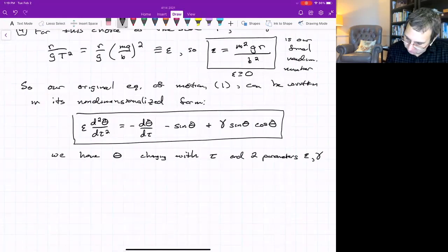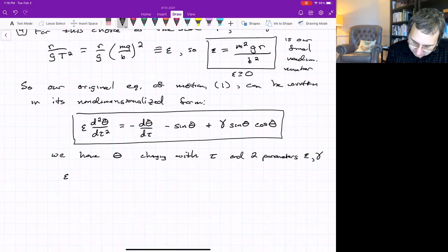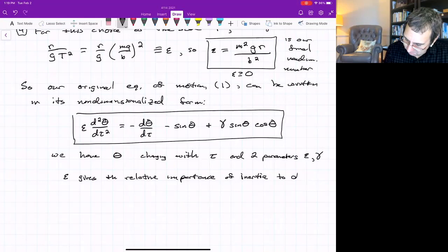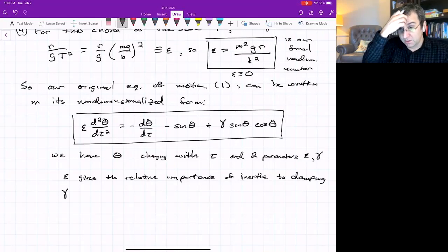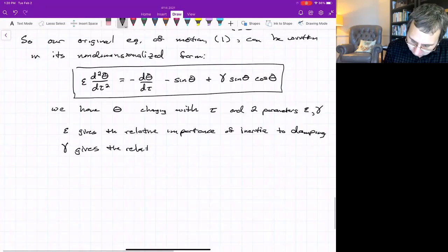And we have interpretations. I think epsilon is an inertial term. Epsilon gives the relative importance of inertia to damping. And gamma is related to the relative importance of the rotational effect to gravity.